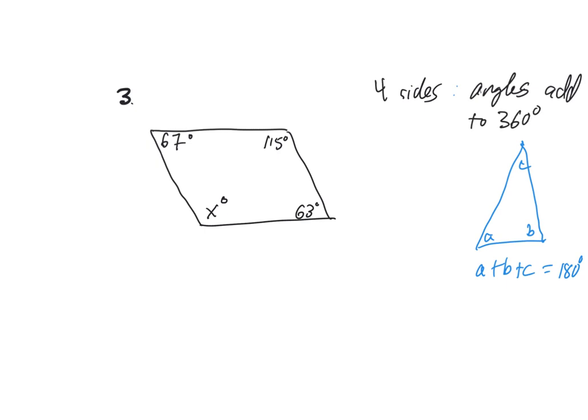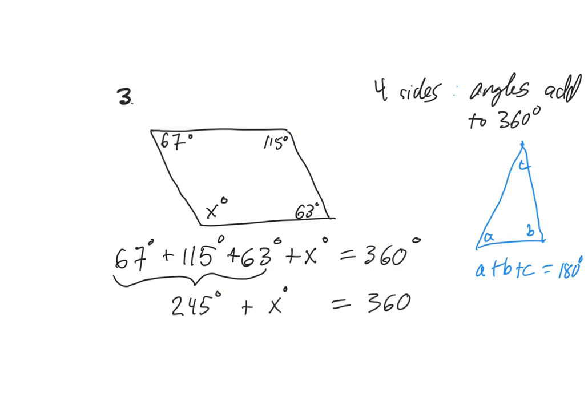So then you're just going to set it up and go, all right, 67 plus 115, these are degrees, plus 63 degrees, plus x degrees, equals 360 degrees.